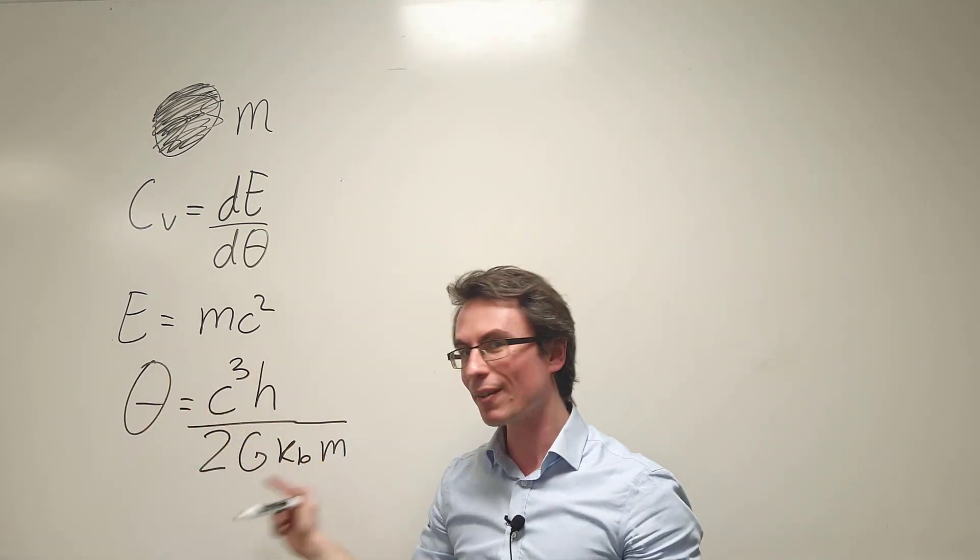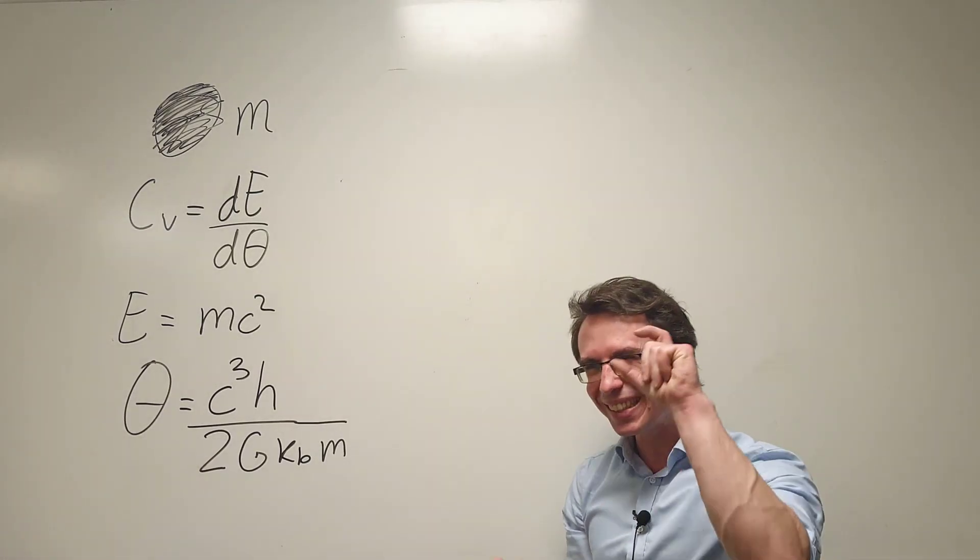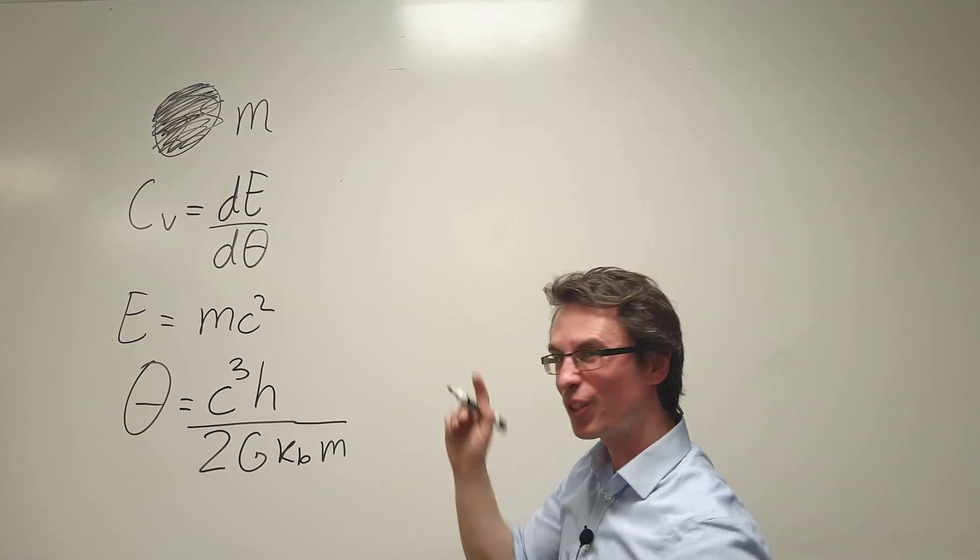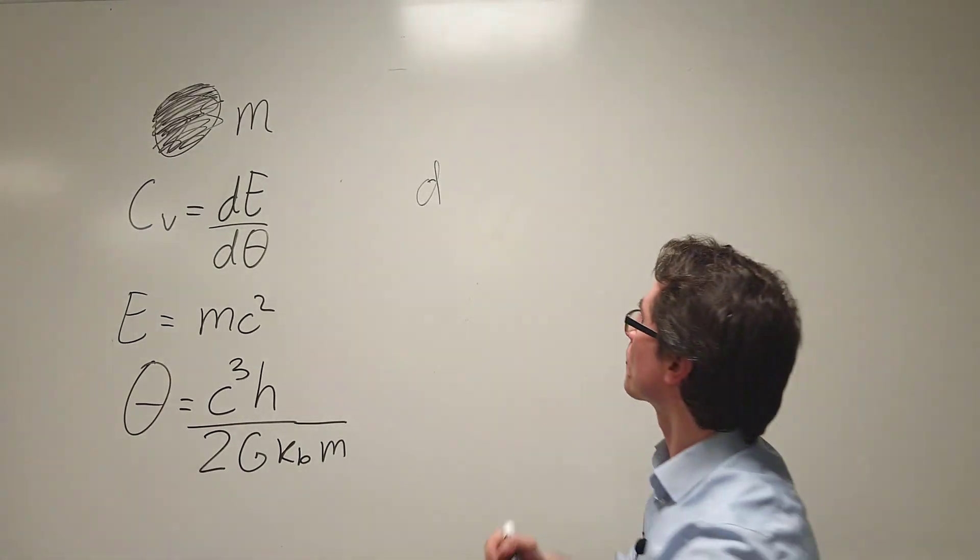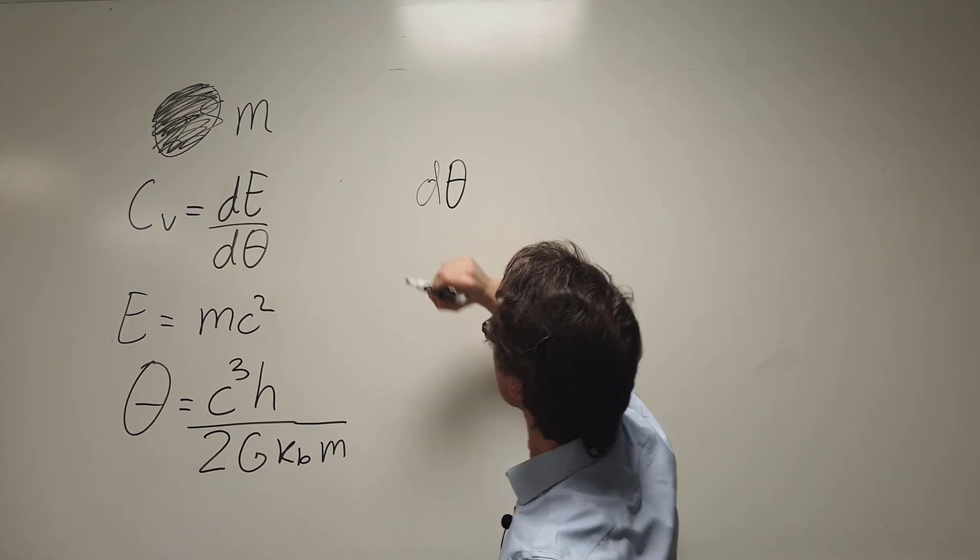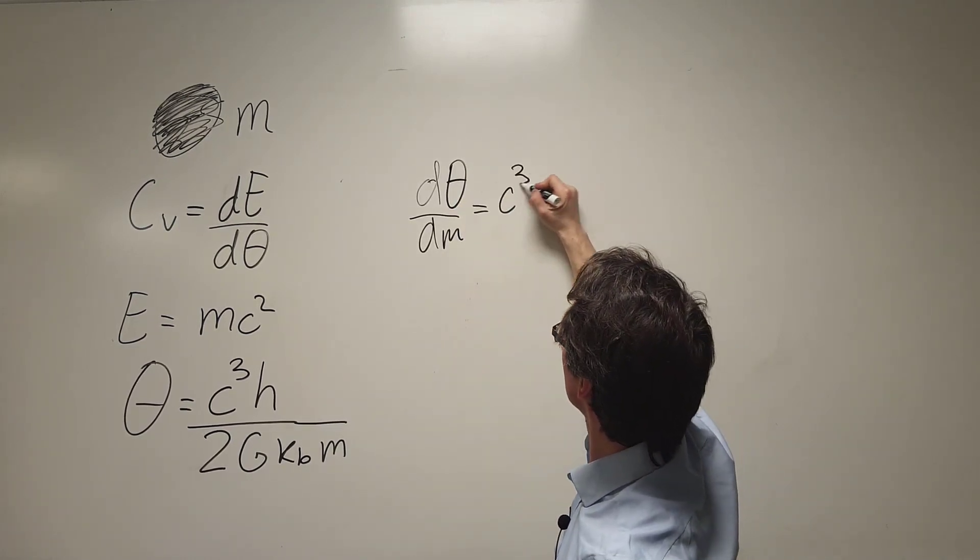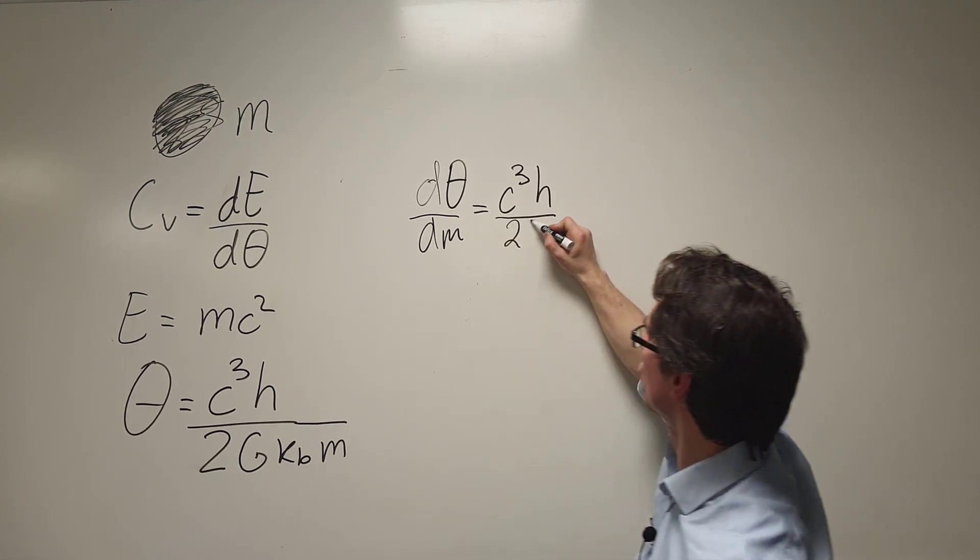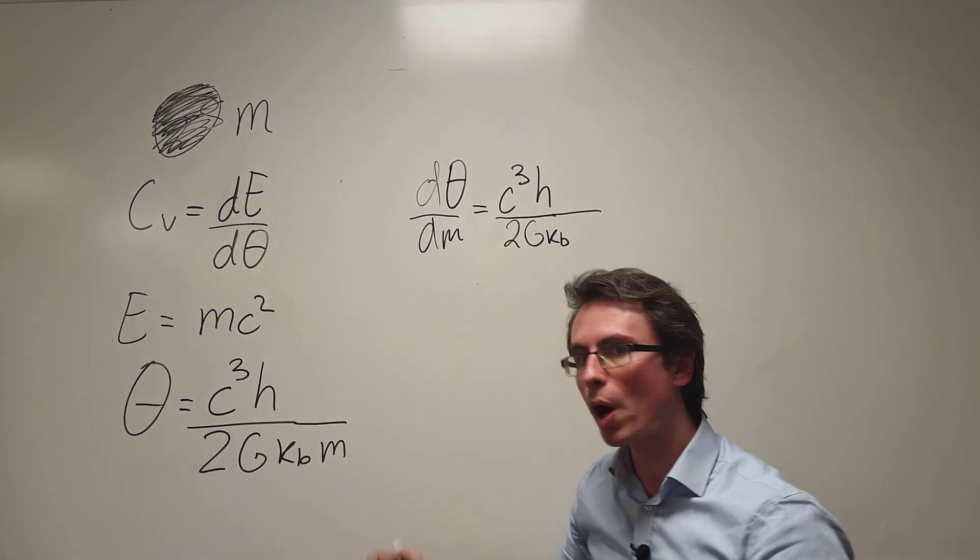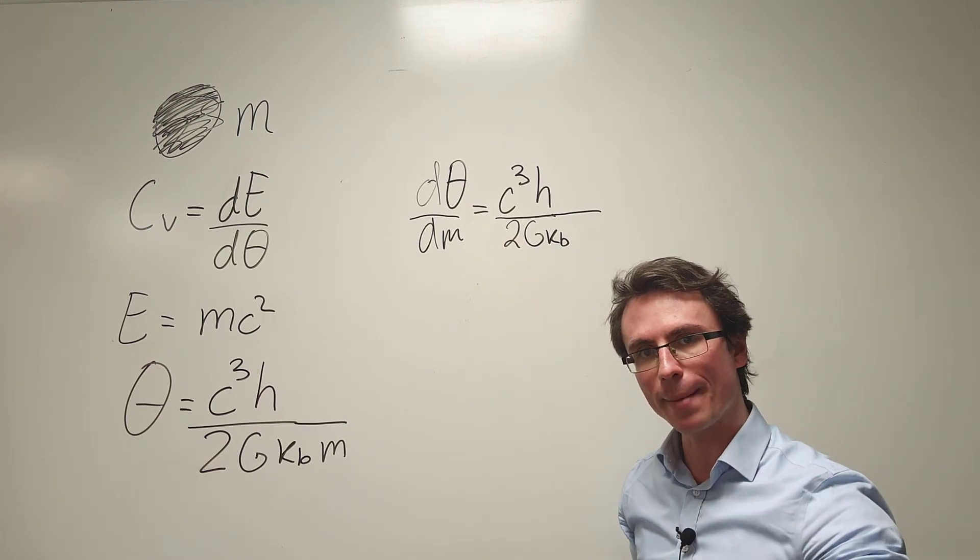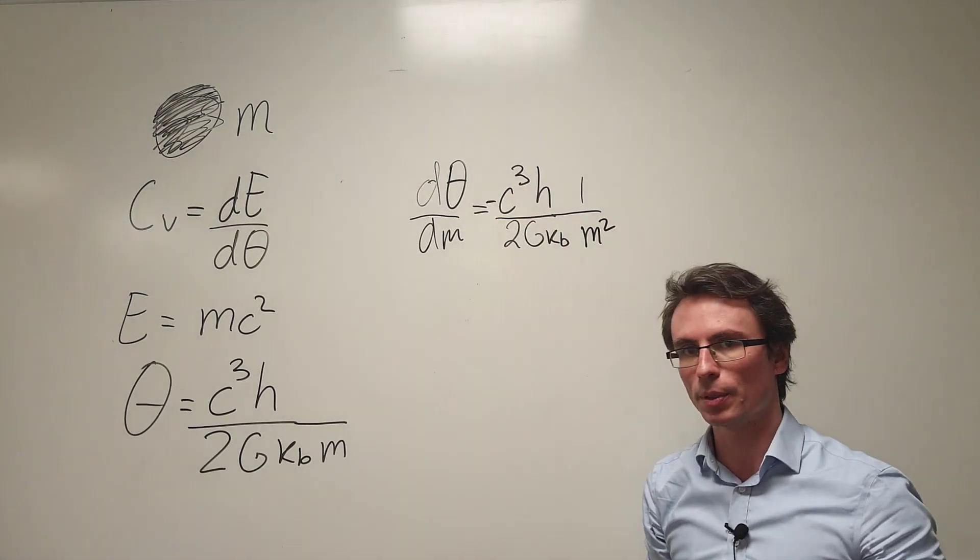The first thing I'm going to do is have a look at theta and that is a function of m. So in order to find that little tiny infinitesimal delta theta I'm going to differentiate with respect to m. So what I'm going to get is d theta by dm is going to equal to c cubed h over 2 g k subscript b, Boltzmann's constant. Now the derivative of 1 over m is minus 1 over m squared. So 1 over m squared with a minus sign here which is going to be really important.